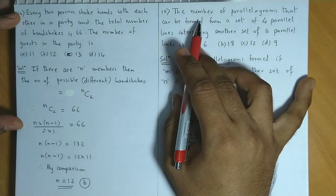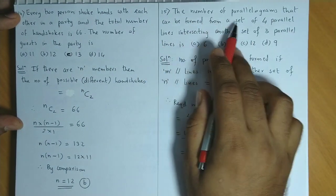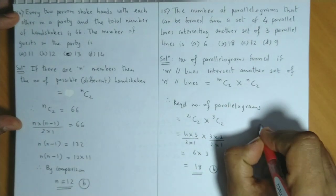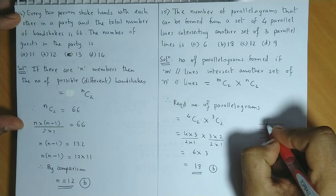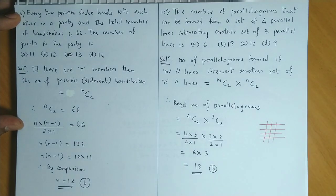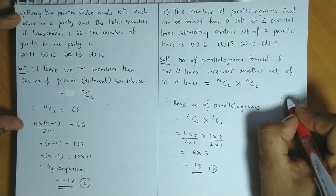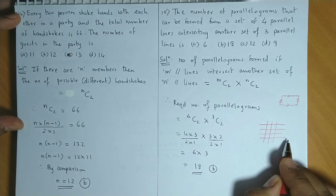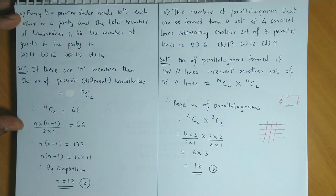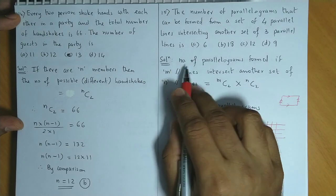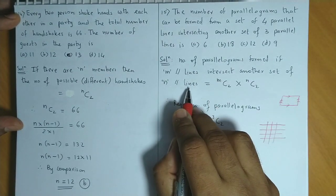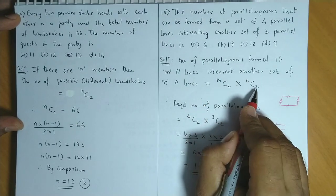Question number 15: The number of parallelograms that can be formed from a set of four parallel lines intersecting a set of three parallel lines. We know that in a parallelogram we need two parallel lines from each set. So in the vertical set we need two lines at a time. The number of parallelograms formed if m parallel lines intersect another set of n parallel lines is given by mC2 into nC2.